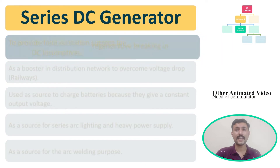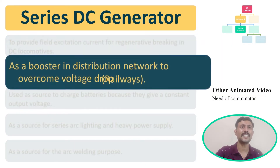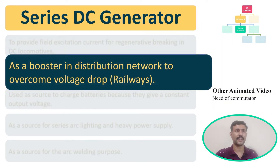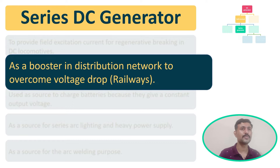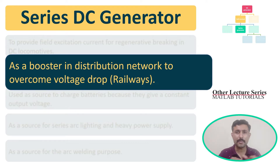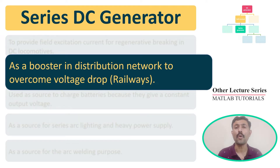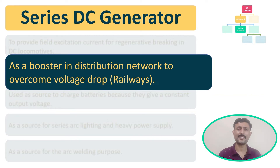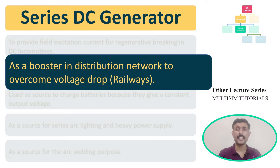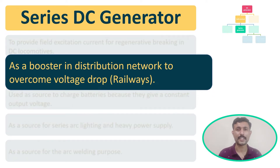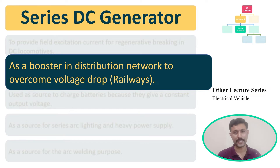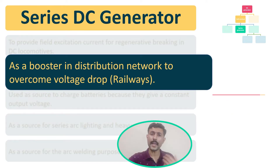The next application is that the DC series generator can be used as a booster in distribution networks for railways. Because of its characteristic to provide large current, for the same speed it can provide larger current compared to a DC shunt generator, which is why it is preferred here.